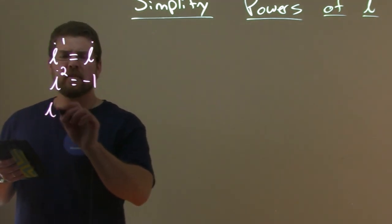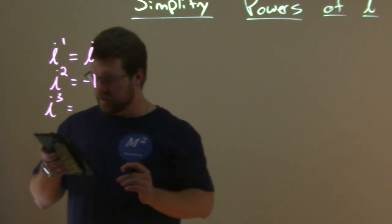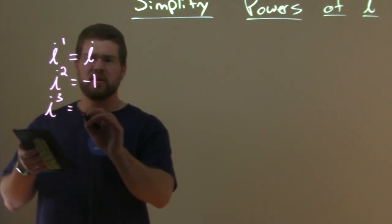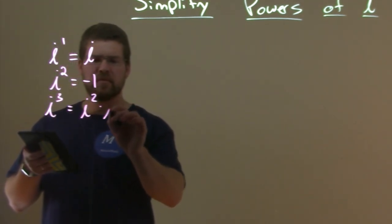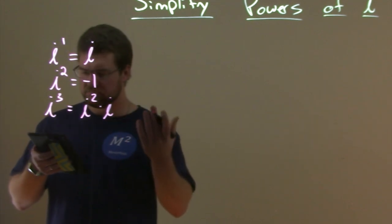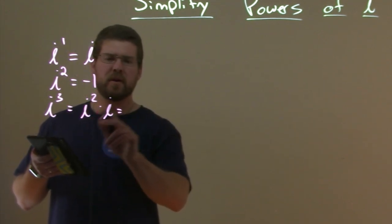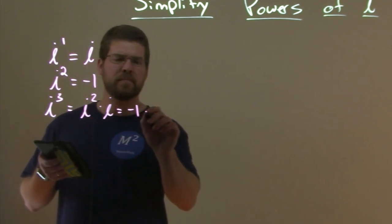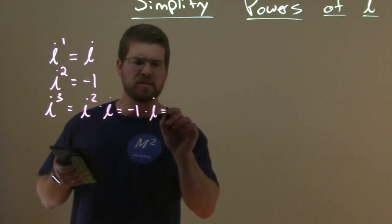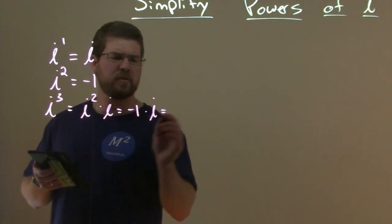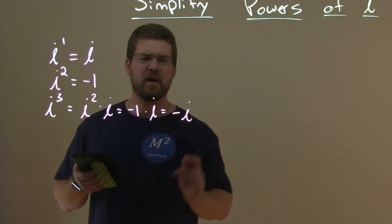What's i to the third power? Well, i to the third power is i squared times i, which is — well, i squared is negative one, and i is just i. So i to the third power is negative i.